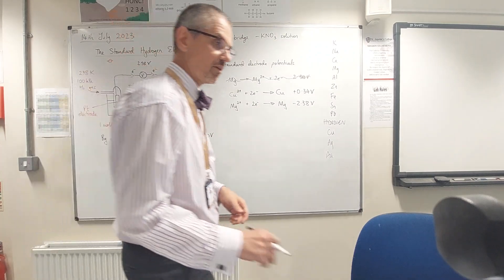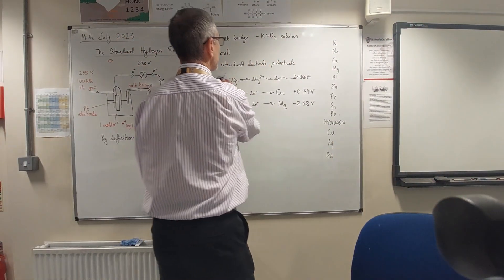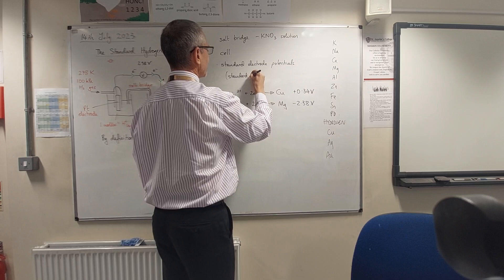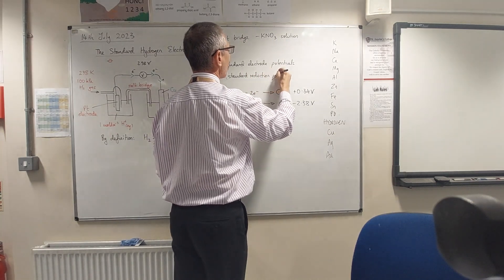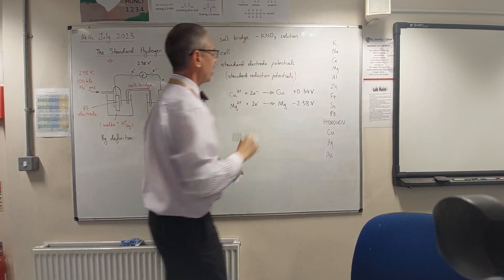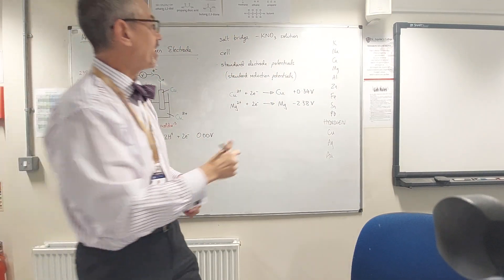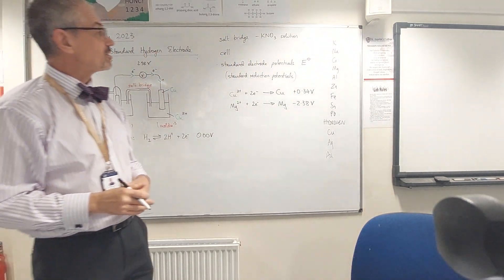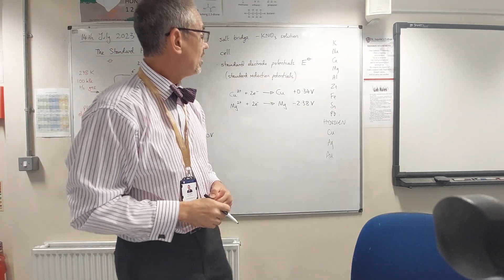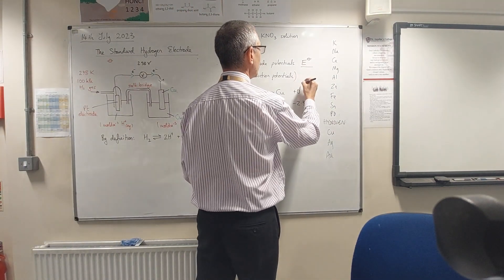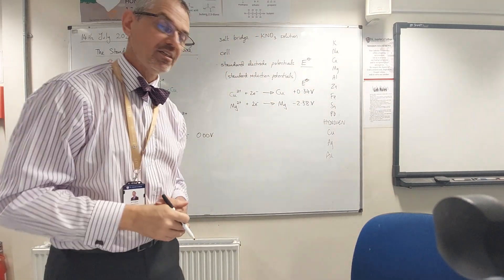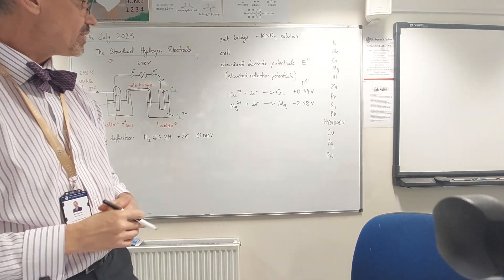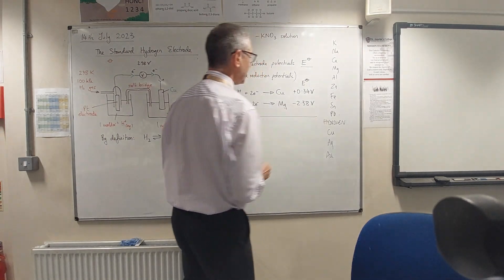They are sometimes called standard reduction potentials, by the way, because they are always written as reduction. They have the symbol capital E with that familiar London Underground symbol indicating things were under standard conditions. That usually gets pronounced as E naught, so these are sometimes referred to as E naught values.